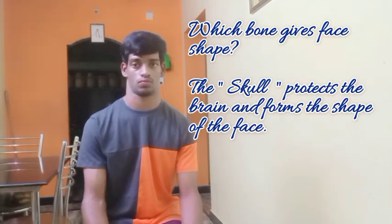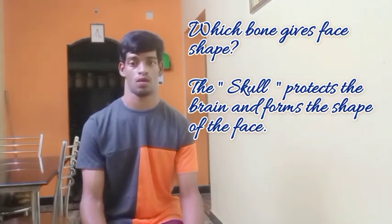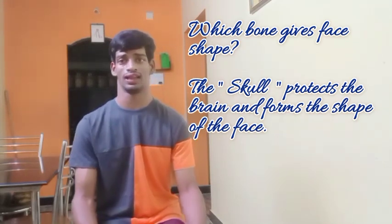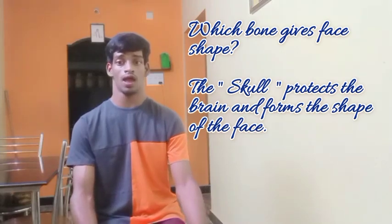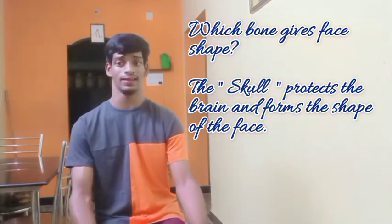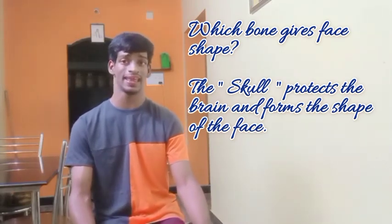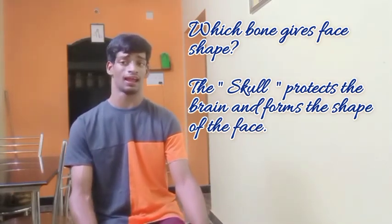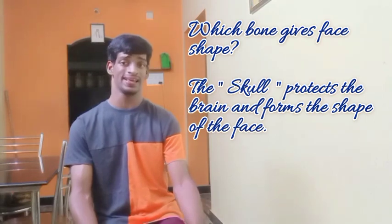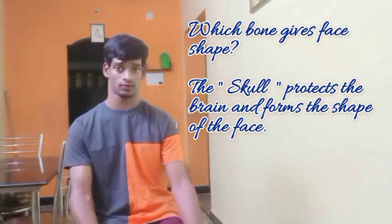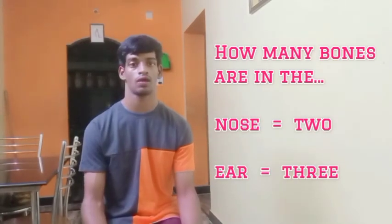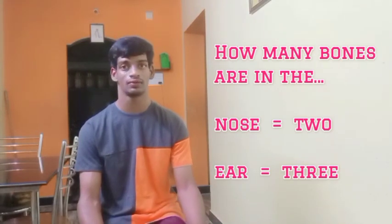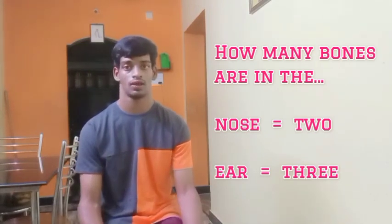What do you do? The skin, the skull, the brain, and the shape. How do you get the nose? Two bones. How do you get the nose? Three bones.